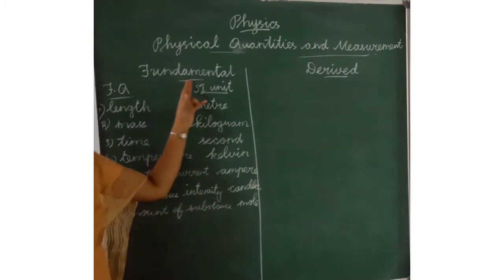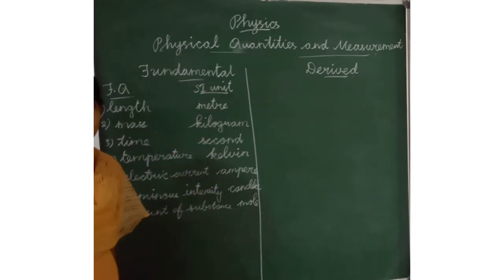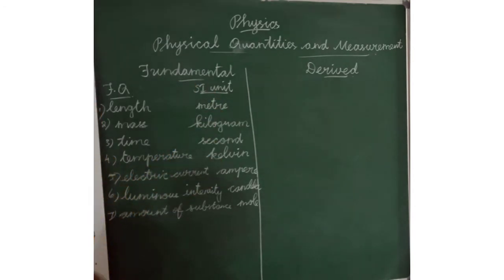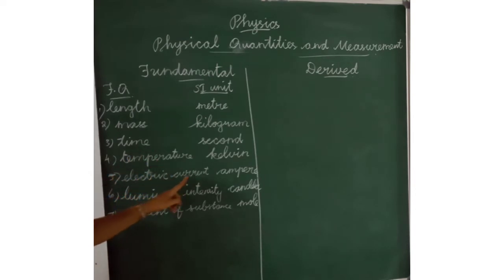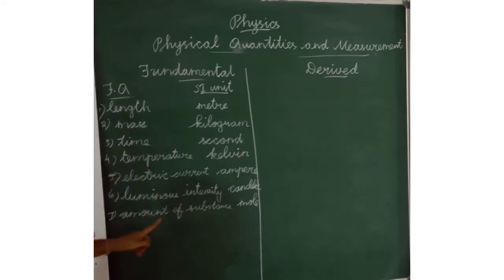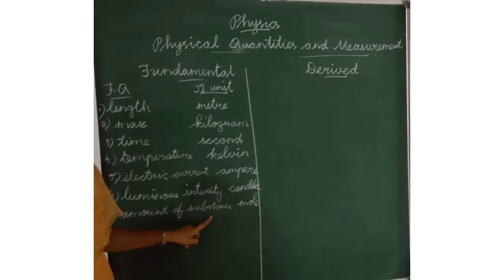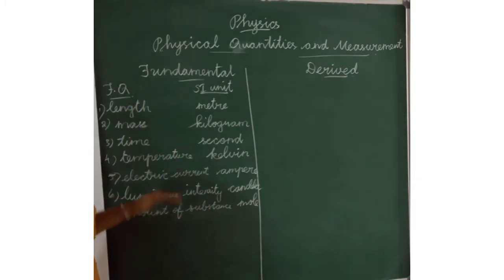We have 7 types of fundamental quantities. They are: length, mass, time, temperature, electric current, luminous intensity, and amount of substance. These are the 7 fundamental quantities.